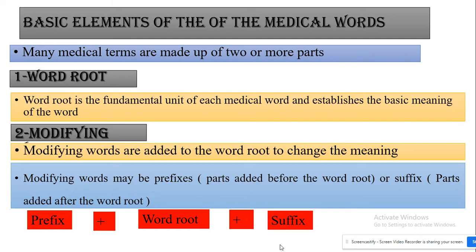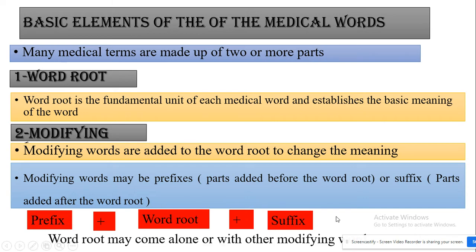The general rule is that the word root may come alone, or it may come with a suffix, or with a prefix, or with both of them. The word root can come alone, or with a prefix that changes or modifies the meaning while the basic meaning remains fixed, or with a suffix which also slightly changes the meaning while the basic meaning stays constant.